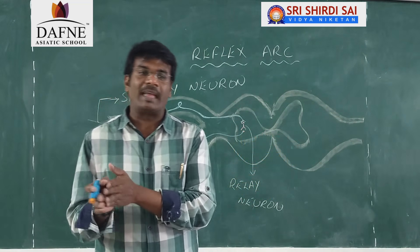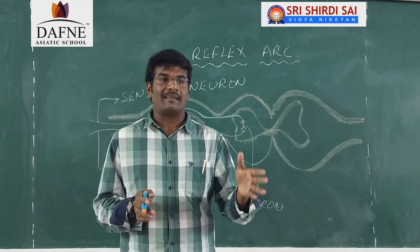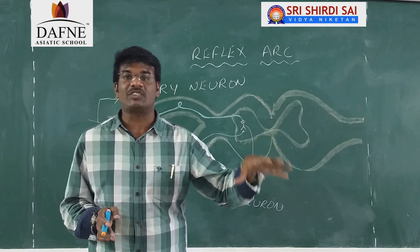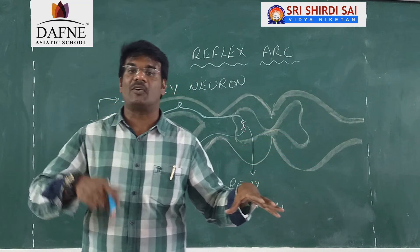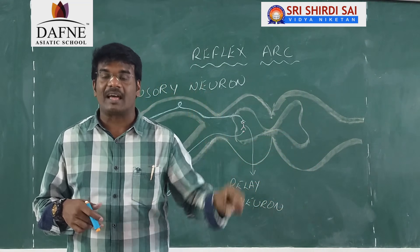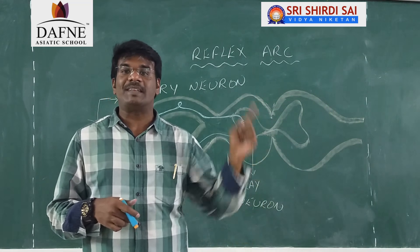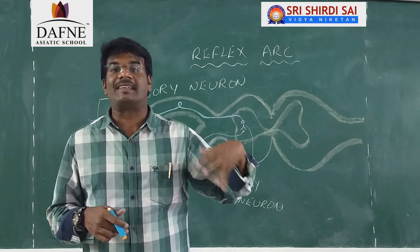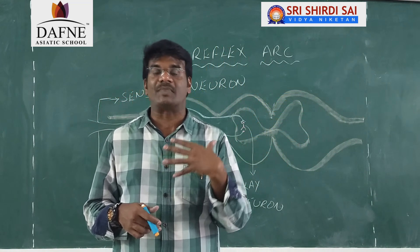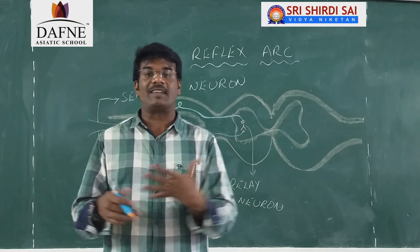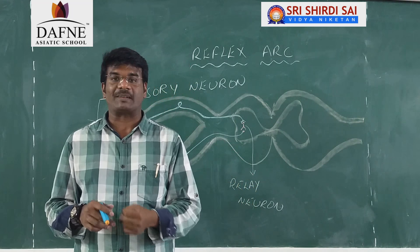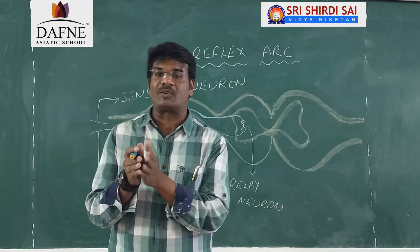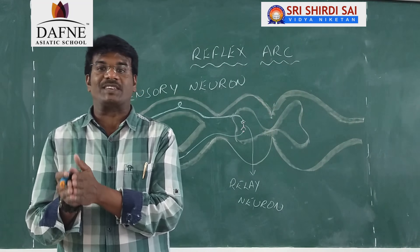We also discussed that the afferent nerves are the ones which sense the stimulus inside the body of the organism, and that particular stimulus has to be sent to the brain, which then gives the exact response that the organism should give. Under the involuntary functions, we have discussed reflex actions.